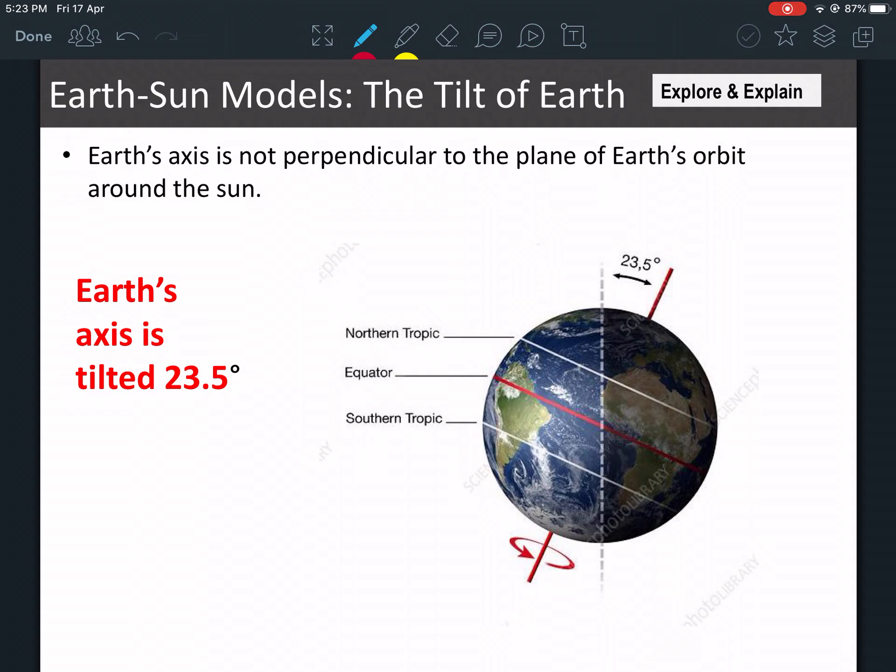So first of all, you already know we talked about this briefly last lesson, but we're going to take it in detail right now. The Earth's axis is not a straight line. It's actually tilted at an angle of 23.5 degrees.